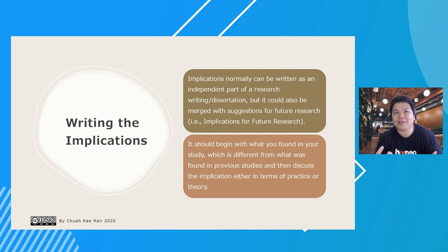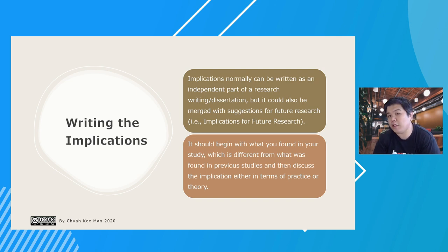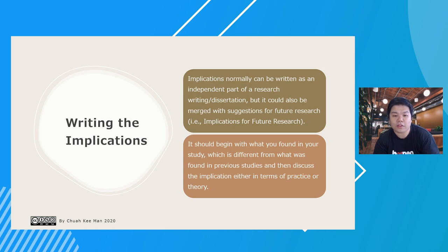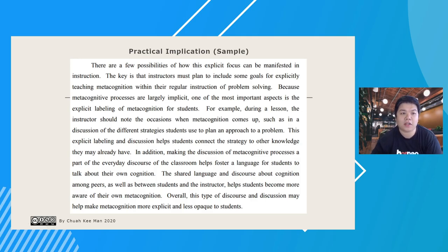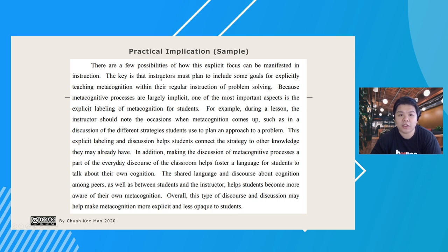How do you write implications? Normally it's written as an independent section of a research paper or dissertation, but many people also merge it with future research — for example, 'Implications for Future Research' or 'Implications of the Study and Recommendations for Future Research.' Either way, it should begin with what you found that is different from previous studies, then discuss the implication in terms of practice or theory. A sample practical implication relates findings to how they contribute to classroom instruction for teachers.